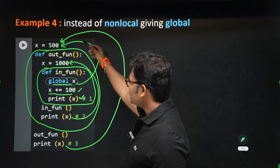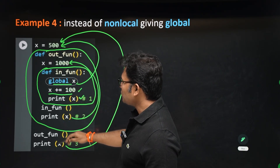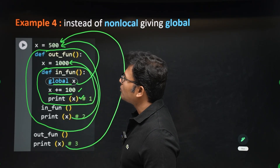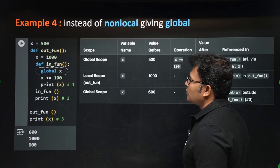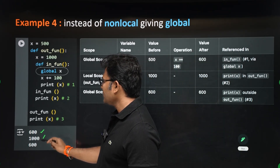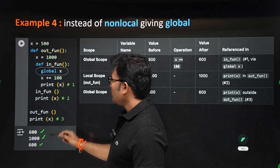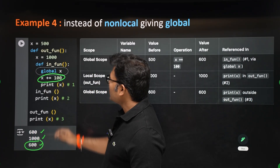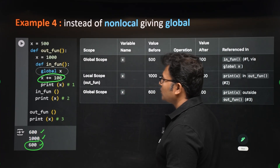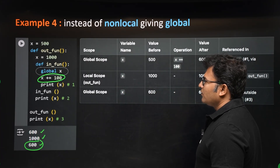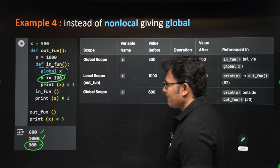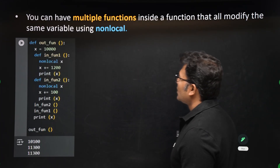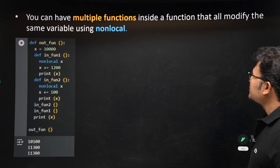Note that here 500 is actually local to that particular scope even though we call it global — both are in the same scope. So you get 600, then 1000, then 600. Whenever you use the global keyword and modify a global variable from inside a function, that change stays permanently.